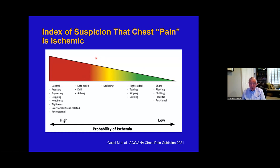A better classification suggested by the guidelines is to divide the category into cardiac, possibly or probably cardiac, and non-cardiac — and that helps you decide what workup is needed. Symptoms are illustrated by the index of suspicion you would have that chest pain is truly cardiac. Central pressure, squeezing, heaviness, tightness, emotional or stress-related — that's likely to be cardiac. On the other end of the spectrum, if it's sharp, fleeting, shifting, pleuritic, or positional, it's likely not cardiac at all.